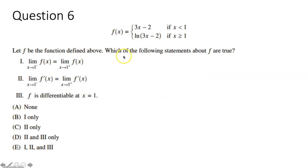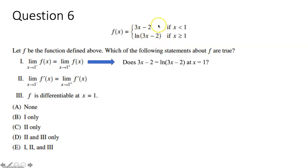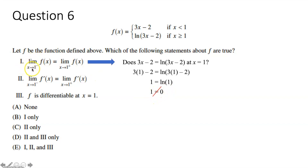Question six says let f be the function defined above — which of the following statements about f are true? For statement one, we're checking whether the left-hand limit as x approaches 1 of f equals the right-hand limit. We plug in 1 into each piece of the piecewise function. Simplifying, we get 1 equals ln of 1, which is 0. Since 1 does not equal 0, the left-hand limit does not equal the right-hand limit — statement one is false.